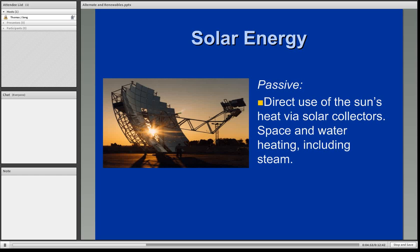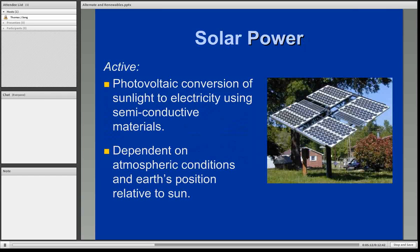Solar comes in two types: passive and active. In the passive use of solar energy, we're taking the sun's heat via some type of solar collector, primarily for space heating, water heating, and generation of steam. Active solar power is the conversion of sunlight into electricity using photovoltaic cells that have semi-conductive materials in them. This is dependent on atmospheric conditions — several days of overcast skies may limit electricity generation. Also, the Earth's position relative to the sun in more northern parts of the U.S. and North America means solar power may not be as reliable a source of energy as in other areas.